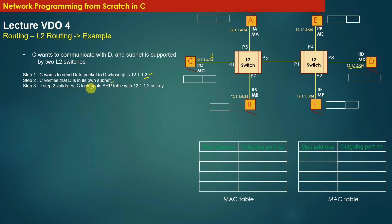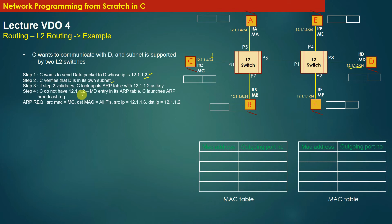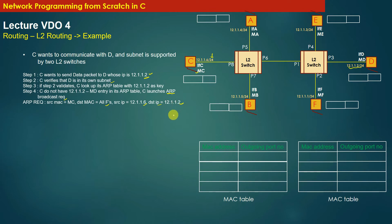C looks up its ARP table with IP address 12.1.1.2 as the key. At this point, the ARP table of C is empty — C does not have an IP-to-MAC address entry for 12.1.1.2. So it is time for C to launch an ARP broadcast request. The source MAC address will be C's MAC address, the destination MAC address will be the broadcast address, the source IP is C's IP address, and the destination IP is 12.1.1.2 — the machine whose MAC address C wants to know. C then places the ARP broadcast request on the wire.